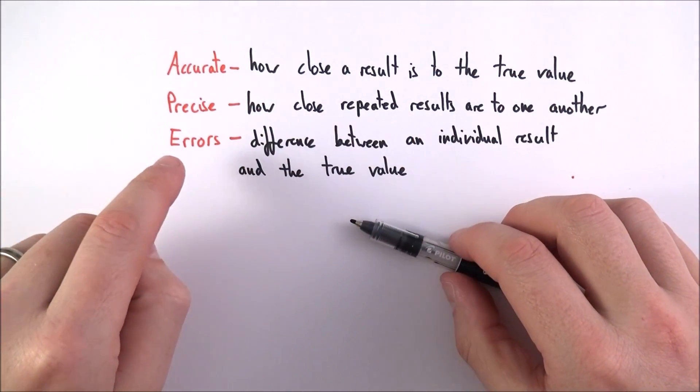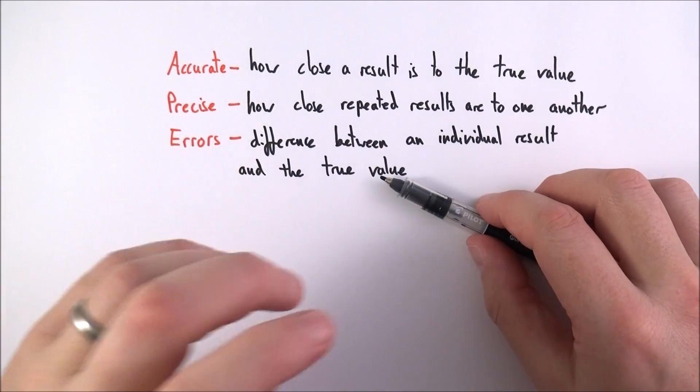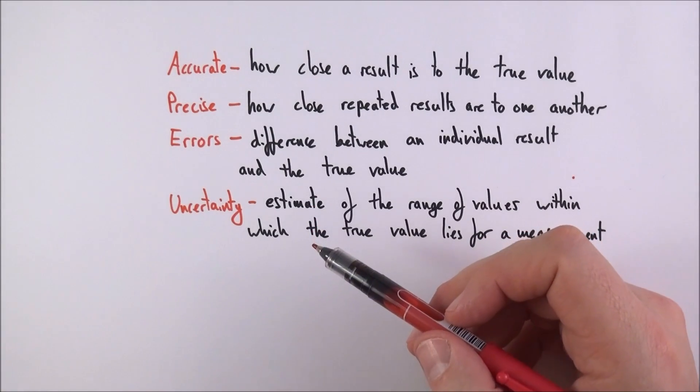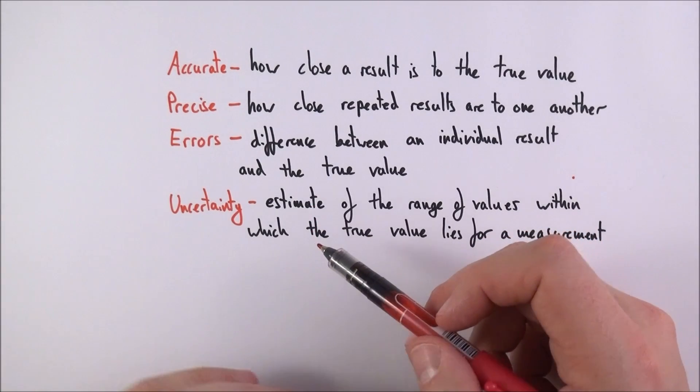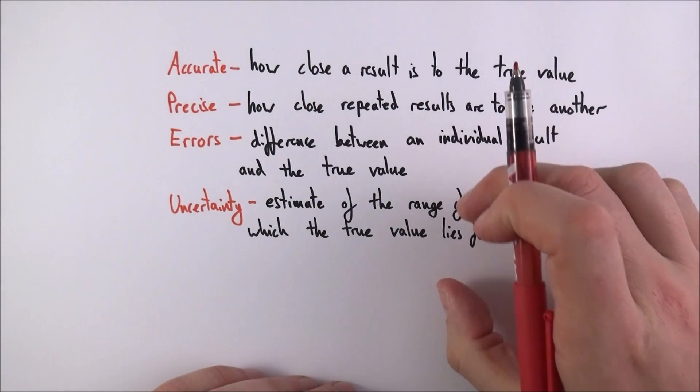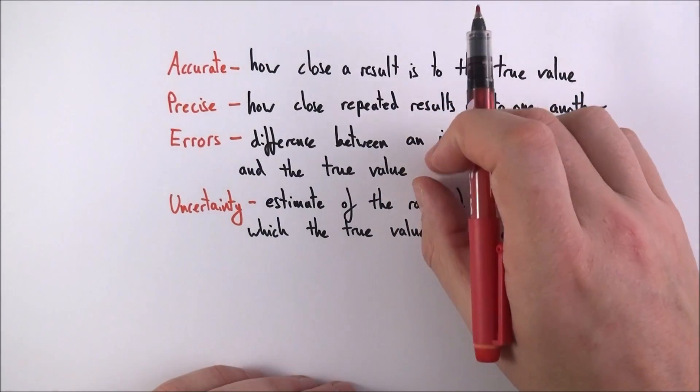When we have an error between the measured value and the true value, what we then introduce is an uncertainty. This uncertainty is really just an estimate of the range of values within which the true value lies for a measurement. The smaller the uncertainty means that we have a smaller error, and therefore hopefully our results are more accurate.